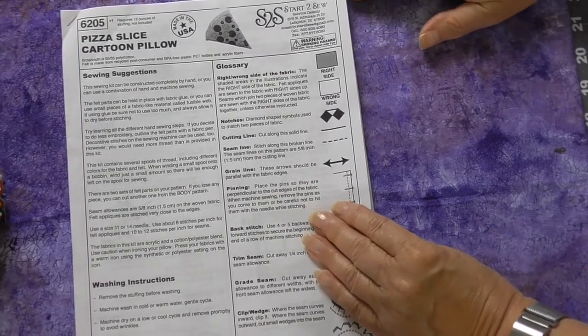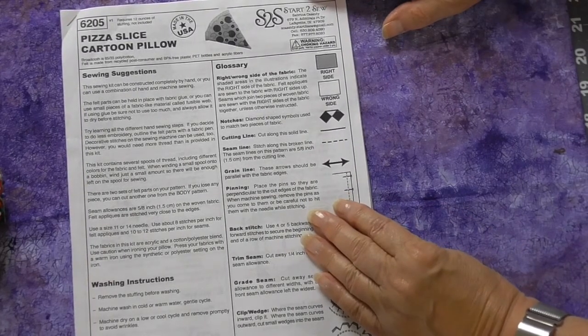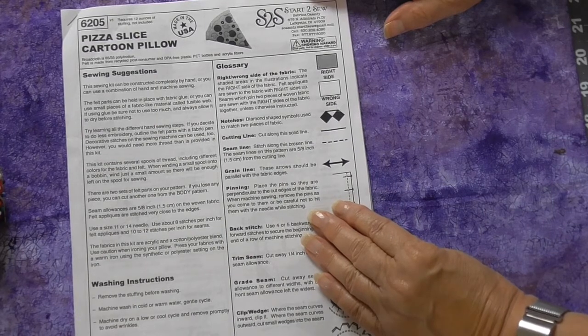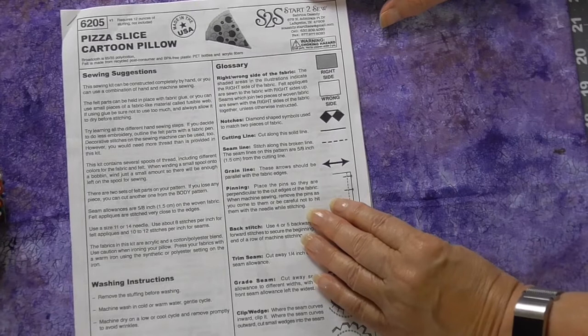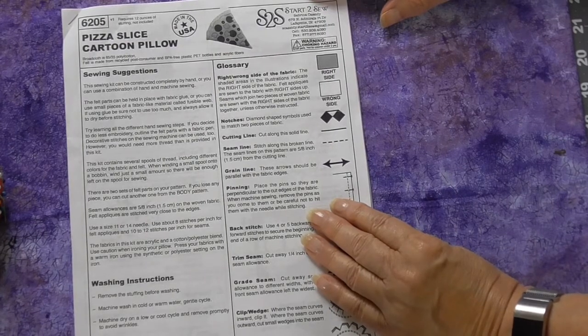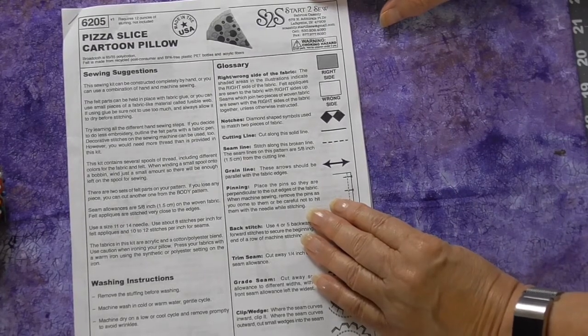Two very important terms are right side and wrong side of the fabric. The right side will show and the wrong side will be on the inside. With felt and plain woven fabric it doesn't matter before the first stitch, but once you start sewing it will make a difference.